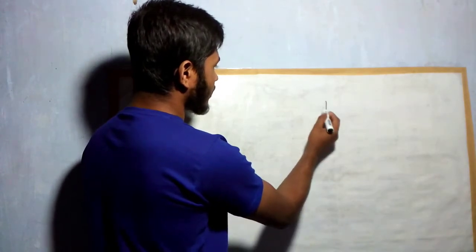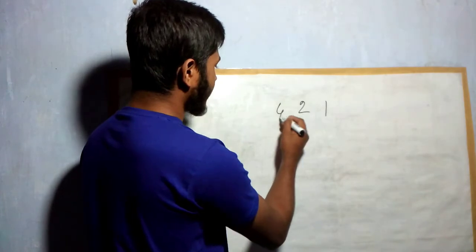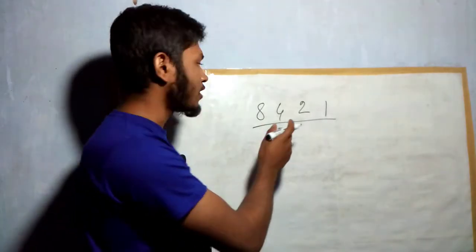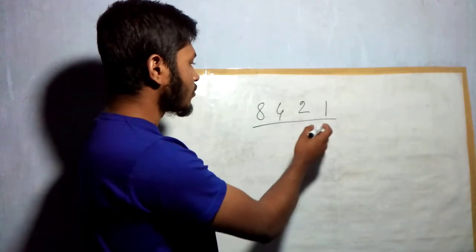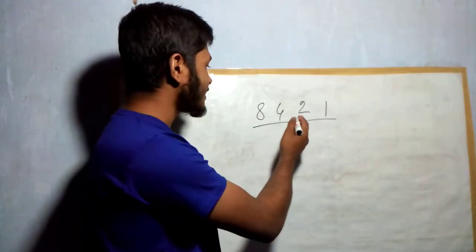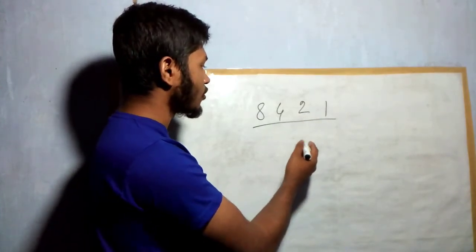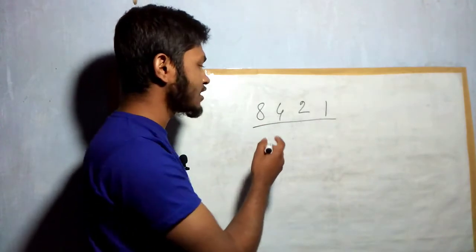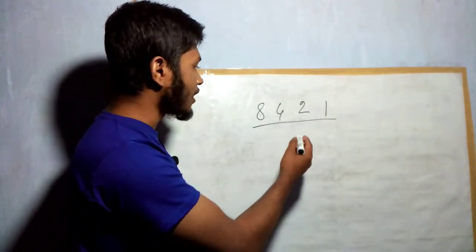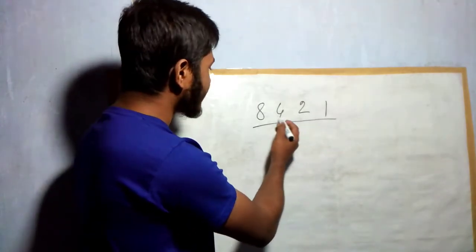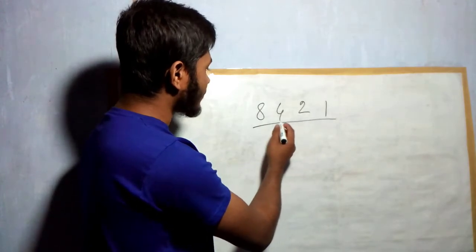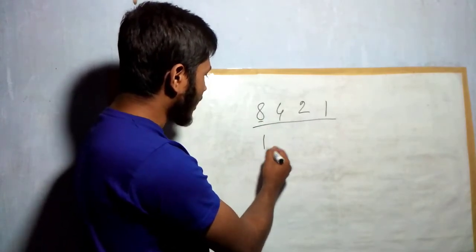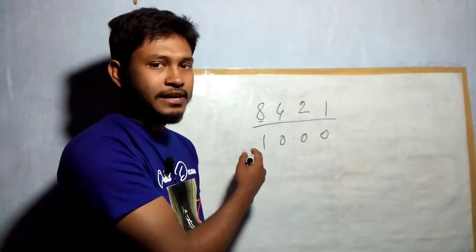For hexadecimal conversion, we'll use a chart with three digits because octal uses three digits. Hexadecimal uses four digits. We'll use BCD code to convert decimal to binary. For hexadecimal to binary, we'll follow this method - zero will be represented as zero zero zero.